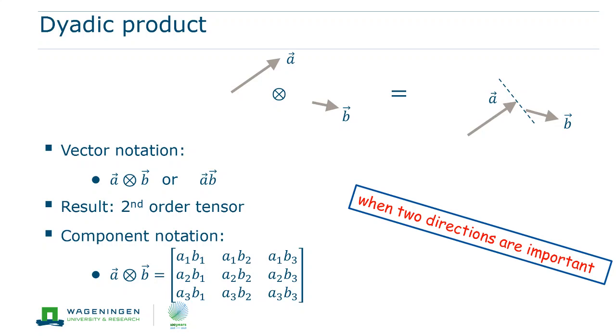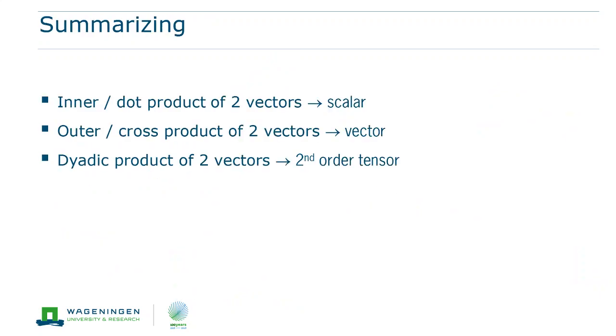Summarizing, a dyadic product occurs when the directions of both vectors are important. Now let's conclude with a short summary. The inner product of two vectors is indicated with a dot, and it yields a scalar. And so the alternative names are dot product or scalar product.